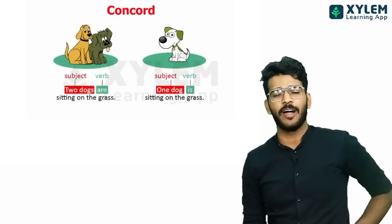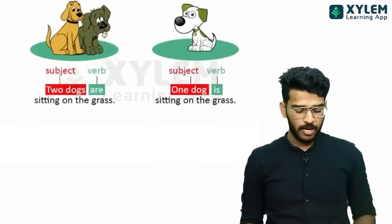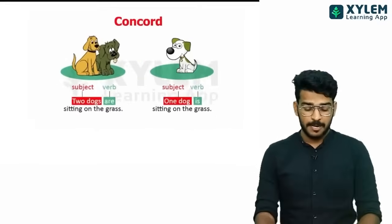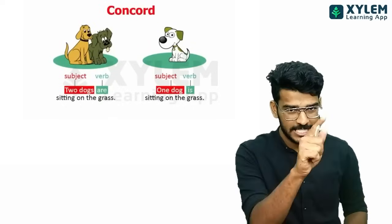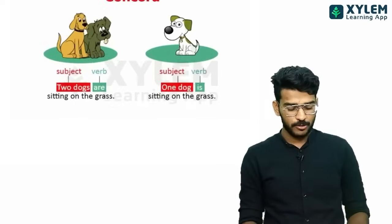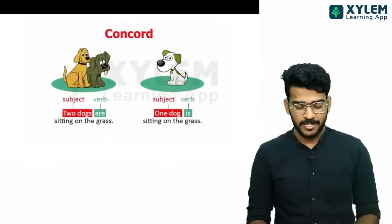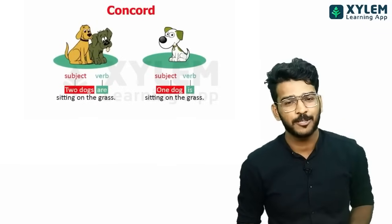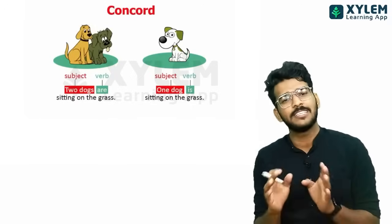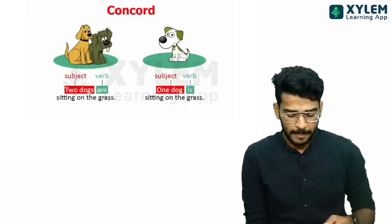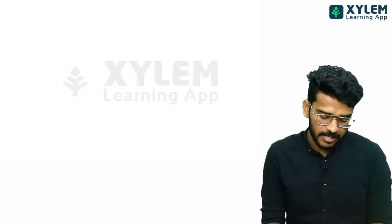This is the concord. We have already studied the concord. We have already studied the subject-verb agreement. The two dogs are plural — we have used the plural form. We have already studied one dog as singular. This is an easy trick — the trick in the present tense.